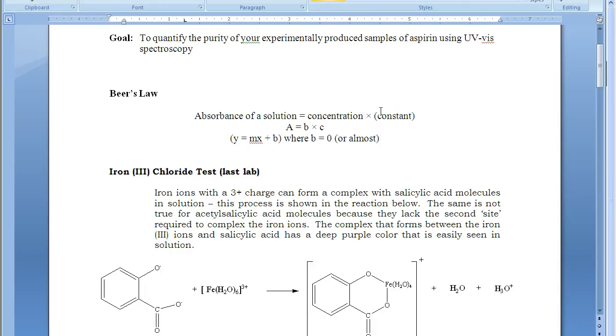That constant is actually the product of two other things, literally how wide your sample is in terms of the cuvette that you use in the spectrometer, but then also an intrinsic property of the chemical itself. We can just group those two together and call them a constant. And so this becomes A, the absorbance, equals B, the constant, times C, the concentration of your analyte, what you're trying to analyze.